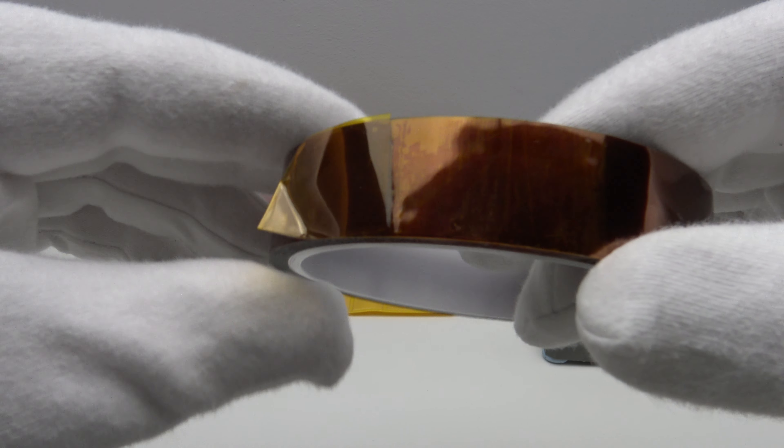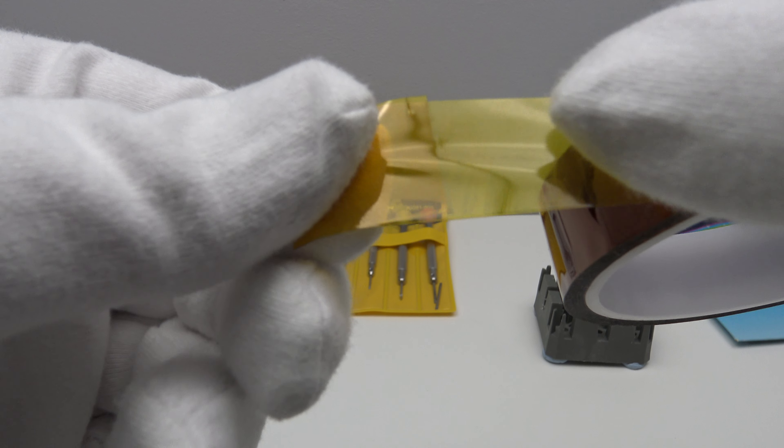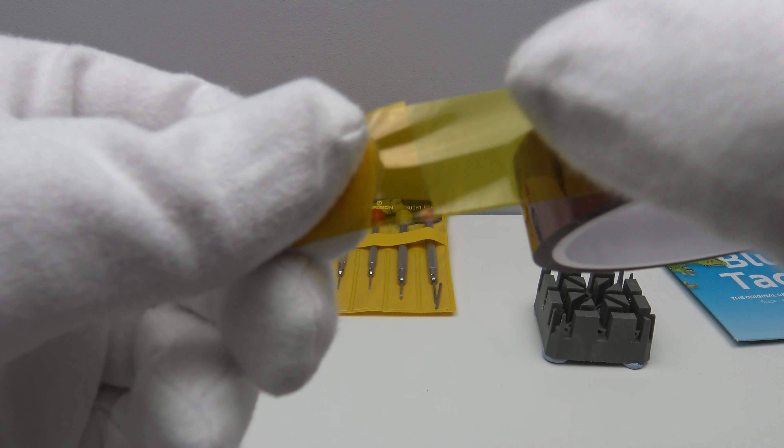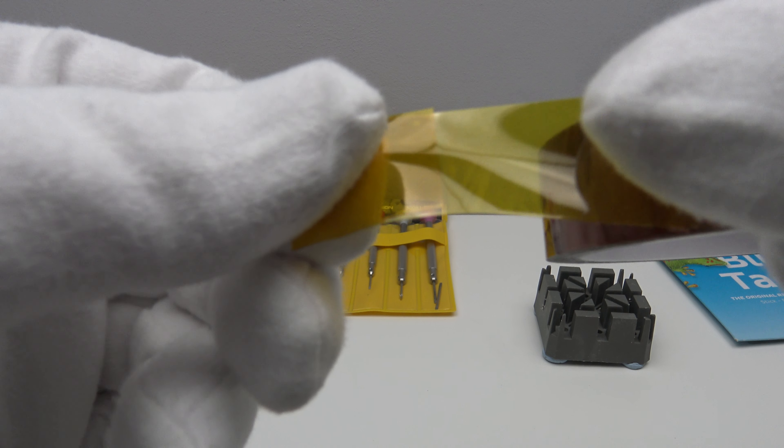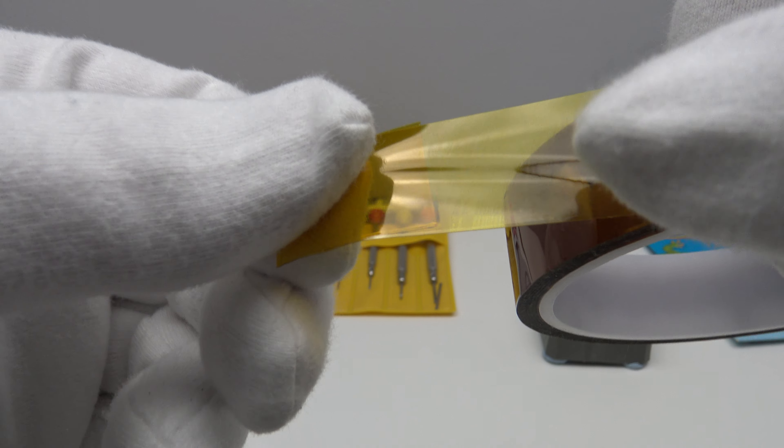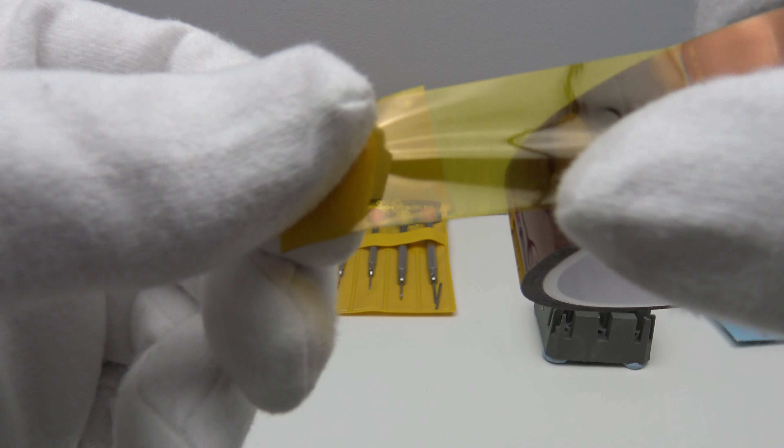Now, this is Kapton Polyimide Tape and Kapton Polyimide Tape has a useful property of a very high melting point of 300 degrees Celsius. The other benefit of using Kapton Polyimide Tape rather than alternative tape such as insulating tape or masking tape is that it peels off bracelet links without leaving any adhesive residue.